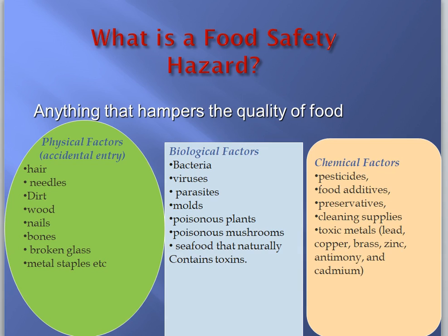Coming to chemical factors, pesticides can enter from different ways. Agricultural food taken from a farm that has been exposed to pesticides could cause contamination. For example, in Plachimeda in Kerala, Coca-Cola was found to be infested with pesticides - that is an example of a food pesticide infiltrating into food.